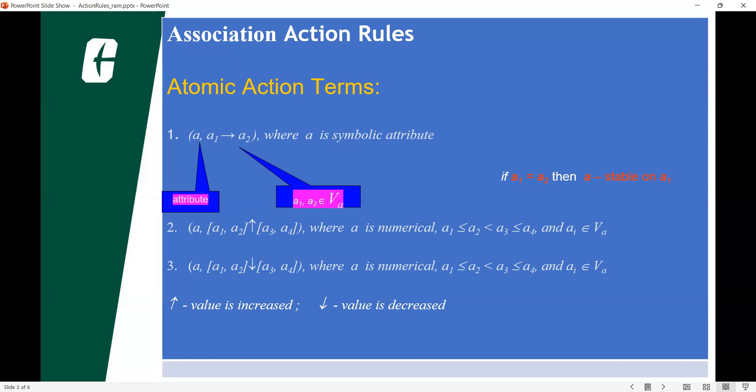In association calculations, we can say that here when a is an attribute and a1 and a2 are values of a. Here if a1 is equal to a2, then a is stable on a1.